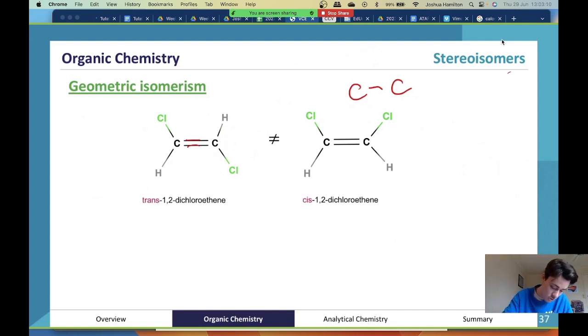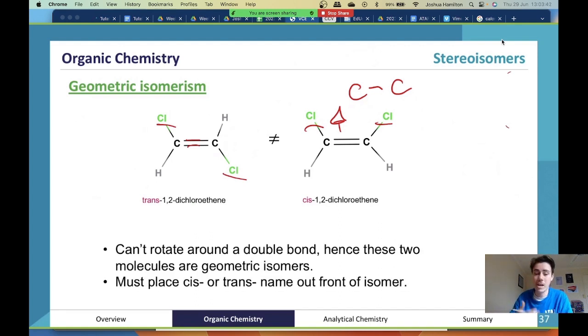These have different names. This here is trans - opposite sides. This here is cis - same. The best way of remembering it is cis-same. These are both at the top. This one here, one's at the top, one's at the bottom. So trans-different, cis-same. They cannot rotate around the double bond, therefore in three-dimensional space they are different.